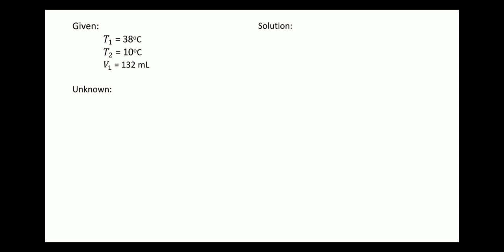Let's write the given and unknown. Given: T1 is equal to 38 degrees Celsius, T2 is equal to 10 degrees Celsius, V1 is equal to 132 mL. The unknown is the final volume, V2.